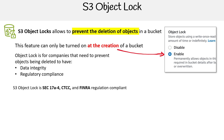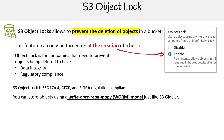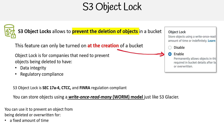If you care about regulatory compliance, you can store objects using the Write Once Read Many model, just like S3 Glacier. That's why we covered WORM earlier — to lay this up for S3 Object Lock. You can use it to prevent an object from being deleted or overwritten for a fixed amount of time, or indefinitely.